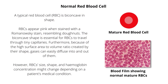A typical red blood cell is biconcave in shape. Red blood cells appear pink when stained with a Romanovsky stain, resembling donuts. The biconcave shape is essential for red cells to travel through tiny capillaries. Furthermore, because of the high surface area-to-volume ratio created by their shape, gases can easily diffuse into and out of them.